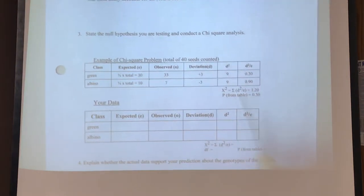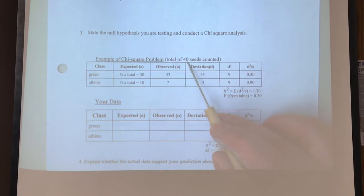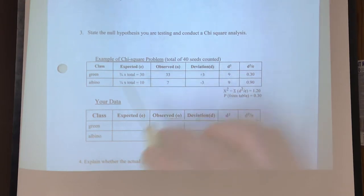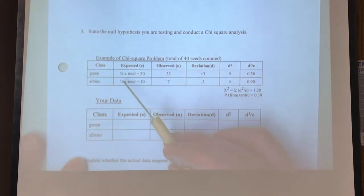All right, so for their example, there were a total of 40 seeds counted. And so in this example, we are expecting three-quarters of those to be green and one-quarter to be albino.